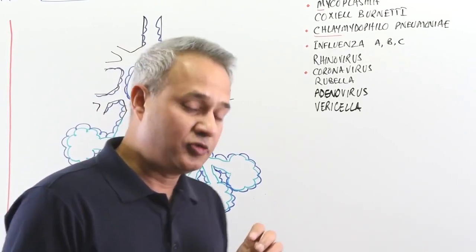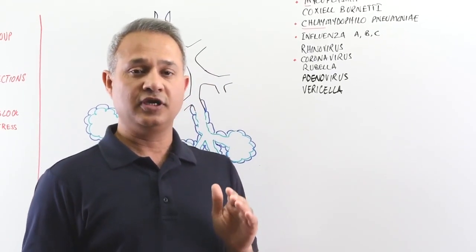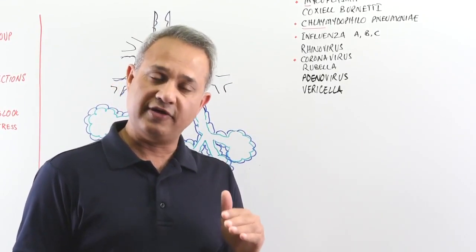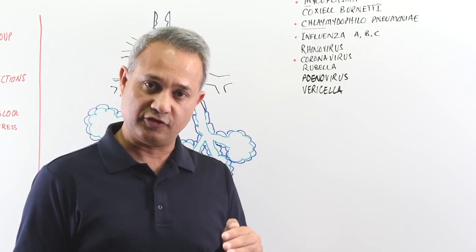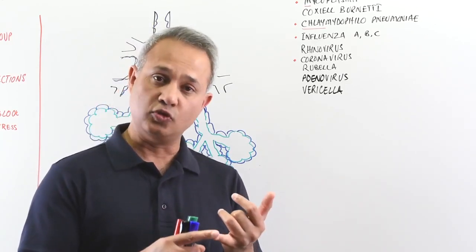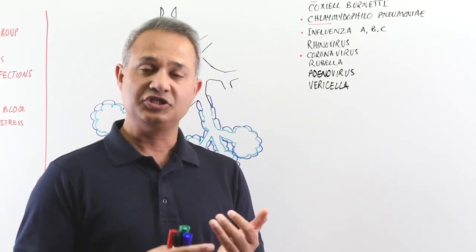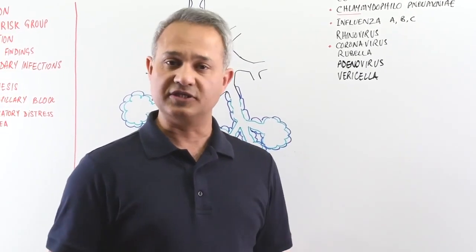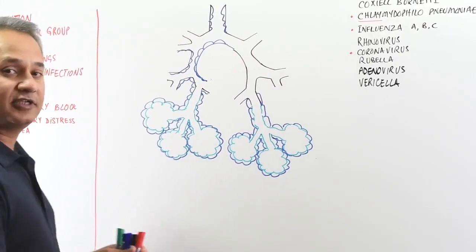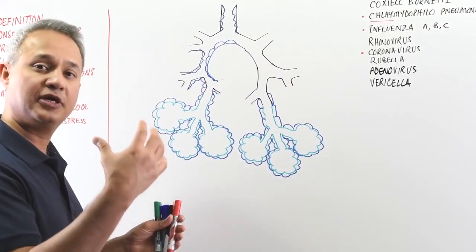Now, atypical pneumonia is usually the pneumonia of the children and young adults. Mostly it affects the patients who are less than 40 years of age and most of the time in the community setting, for example, schools, prisons, shelters, and such other places. Now, what happens? What is the difference of the atypical pneumonia compared to typical?